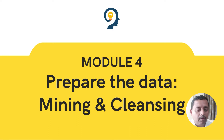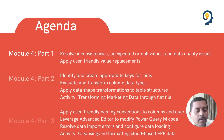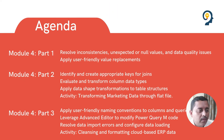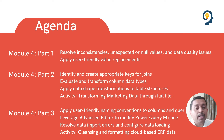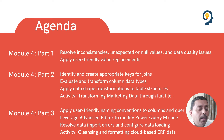This module is divided into three sections. In the first part we will talk about null value data quality issues that might come and how do we mitigate them, and how do we go about user-friendly value replacements. Suppose if you have some columns wherein we have some data that we need to replace values with - we will be learning that in this particular part, which is module number four.